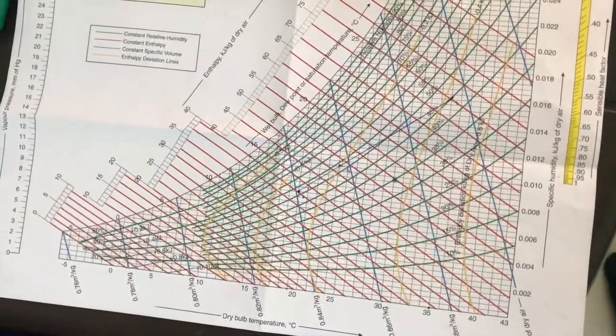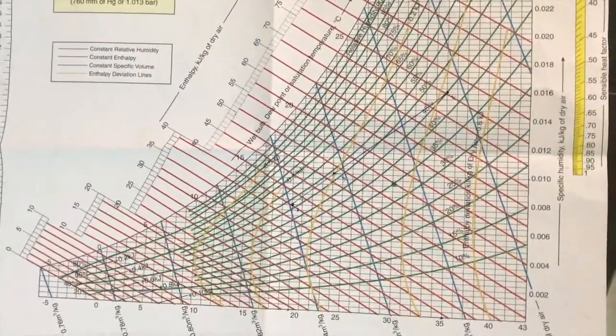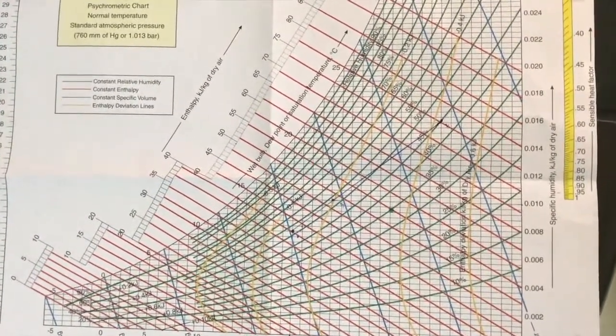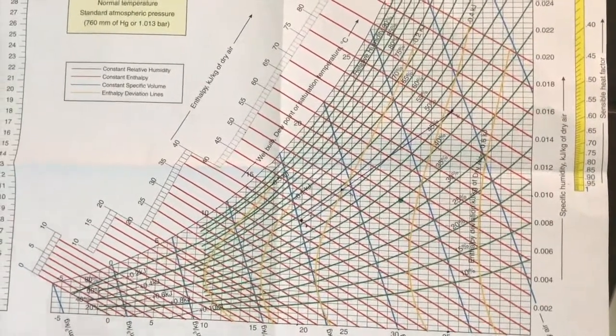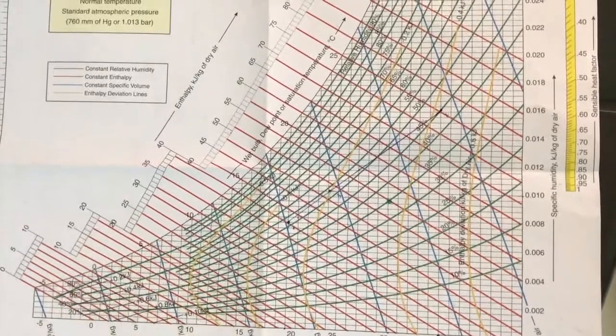By using these lines we are able to determine all conditions at a particular state. By manipulating various formulas and theories available in psychrometric refrigeration, we can find mixing conditions and also bypass conditions, several conditions.